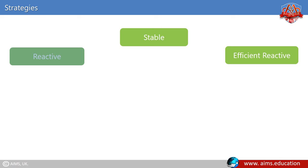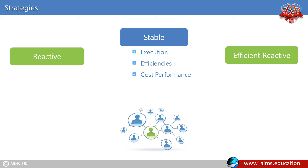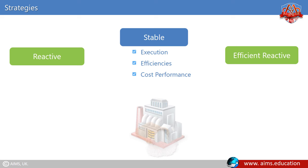Strategies. There are three types of supply chain strategies: stable, reactive and efficient reactive. Stable supply chain strategy is appropriate for chains that are focused on execution, efficiencies and cost performance. They use simple connectivity technologies and have little need for real-time information. For example, a table salt manufacturer uses scale production and dedicated capital assets.